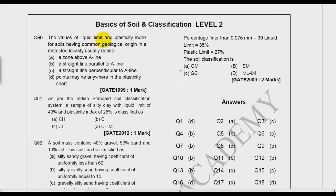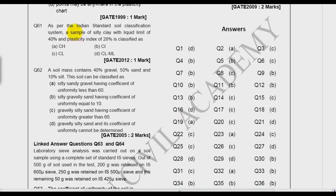The value of liquid limit and plasticity index of a soil having common geological origin in a restricted locality usually defines... This is again a level three question. The answer is a straight line parallel to A-line. I have read it in one of the books but no justification is given. This is level three and you have to skip that question.